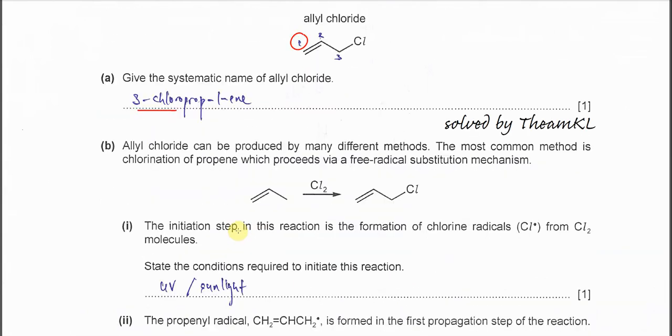For part B, allyl chloride can be produced by many methods. The most common method is chlorination of propene. Propene with chlorine and UV, then one of the hydrogens will be substituted by chlorine to form this.